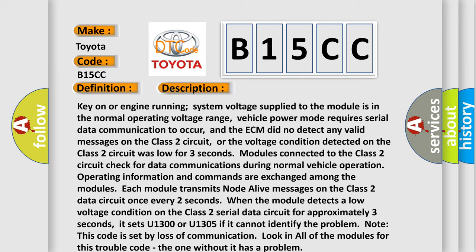Each module transmits node-alive messages on the Class 2 data circuit once every two seconds. When the module detects a low voltage condition on the Class 2 serial data circuit for approximately three seconds, it sets U1300 or U1305 if it cannot identify the problem.